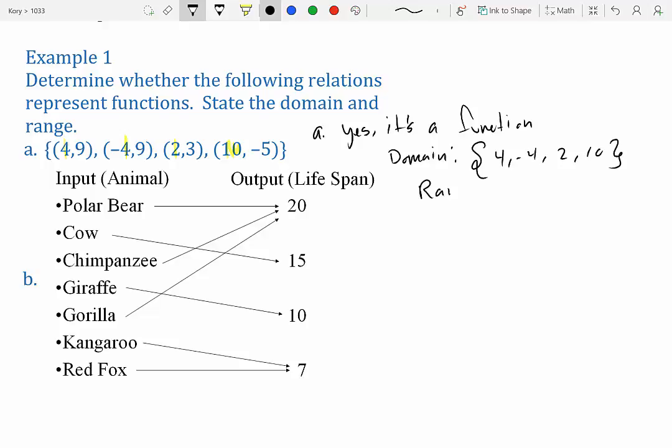And then for the range, we want to list all the y values. So you see how we have 9 and 9? You never repeat things in math. So 9 and 9 is just 1, 9, because they have the same value, 3, and -5. And there we go. We have domain and range and stated if it's a function or not.